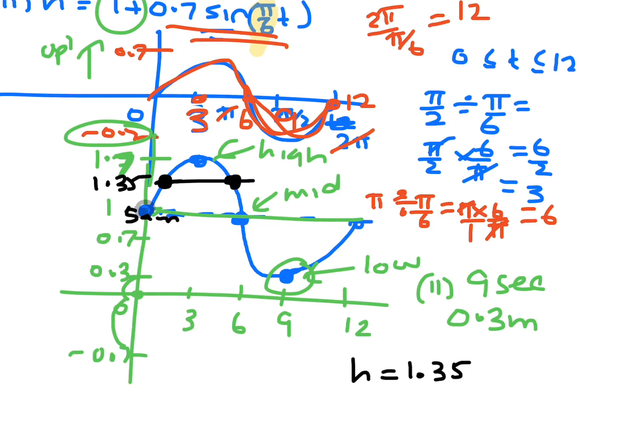So that means that what we need to do is we need to make 1.35 equal 1 plus 0.7 sin π on 6t. And we need to get those two times that are sitting there on the graph.